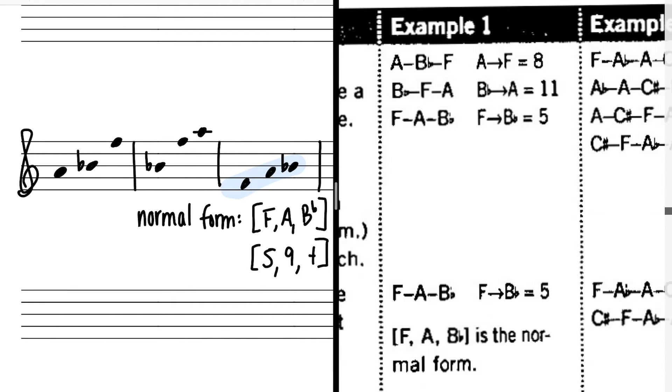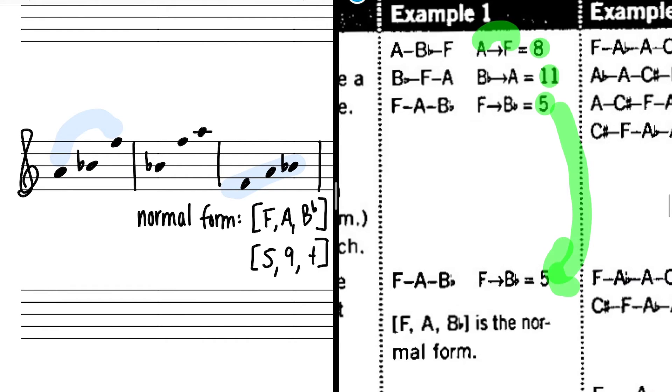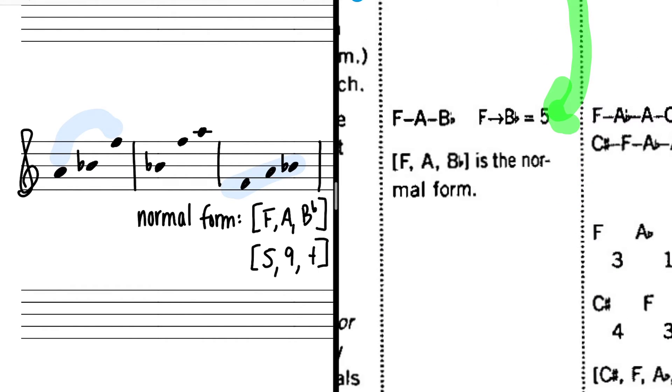This is the process that Strauss steps through in example one. Look at all these orderings. A, B flat, F. The distance between A and F is eight. And we care about the distance between A and F because that's the outer note. So we have A to F equals eight. B flat to A equals 11. F to B flat equals five. That's exactly what we found out looking at the musical staff. So the winner, the smallest number of these three numbers, is five. So five becomes the normal form. F, A, B flat is the normal form.